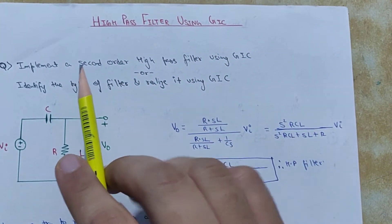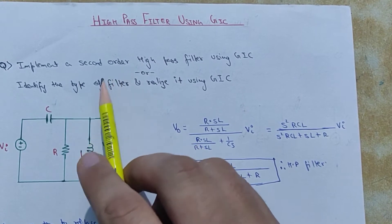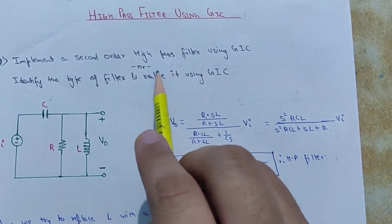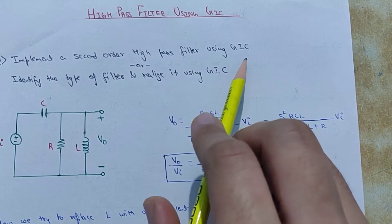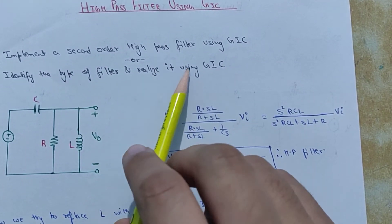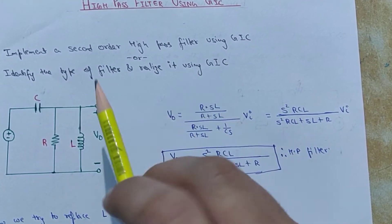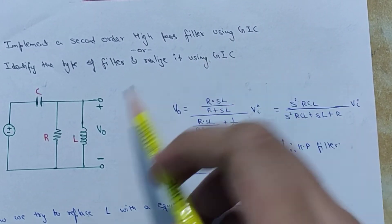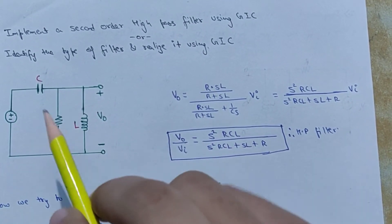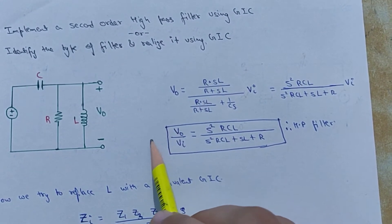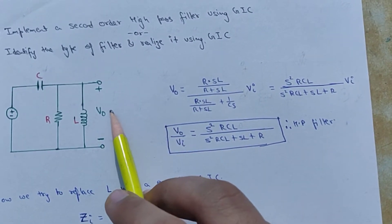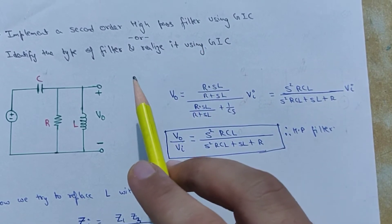So if the question is asked in the exam, it can be asked in two forms. Either it will be asked as 'implement a second order high pass filter using GIC,' or it can be asked 'identify the type of filter and realize it using GIC.' If the question is asked in this format, a filter configuration will be given. Then you first have to calculate the transfer function and prove that it is a high pass filter, and then implement it using a GIC.